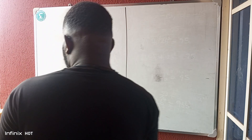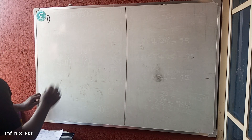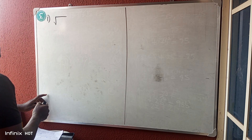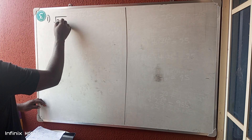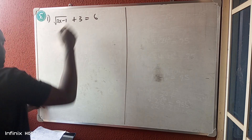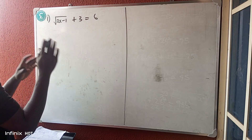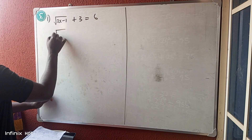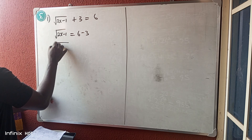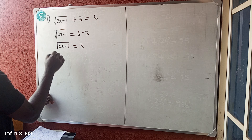Let's continue with our square root questions. This is a special case. Number one: we have root(2x - 1) + 3 = 6. What you do in this case is leave the square root on one side and the number on the other side. So root(2x - 1) = 6 - 3, which gives root(2x - 1) = 3. Then you square both sides.